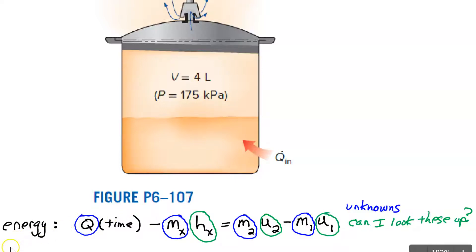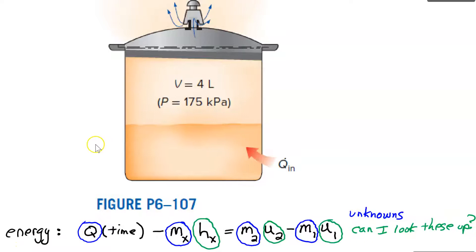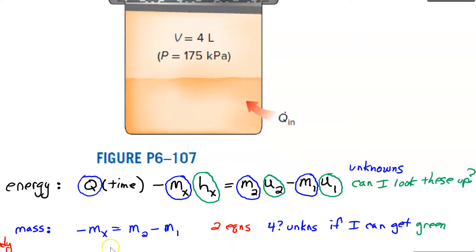One of the equations I plan to write is the mass equation. For the mass equation, I have mass that's leaving the system — mx — and that's negative because it's leaving. That equals the final mass in the system minus the initial mass in the system. So now I have two equations, but I still have four unknowns.